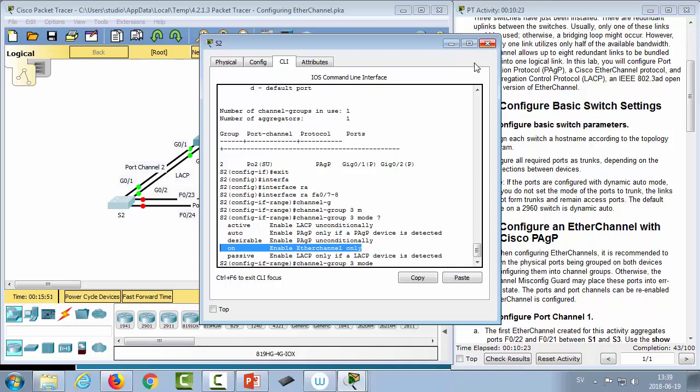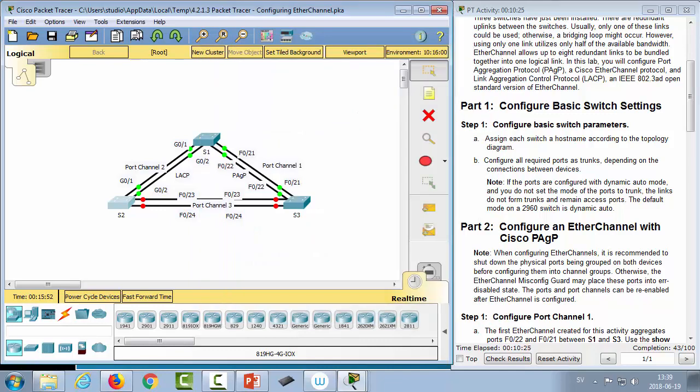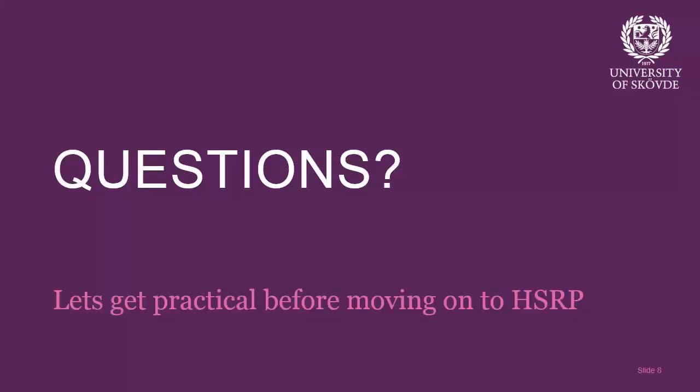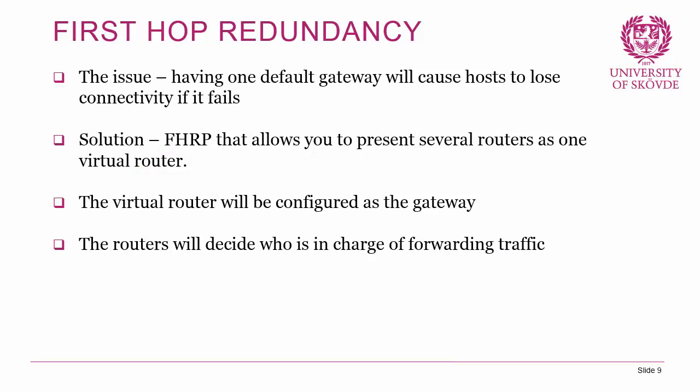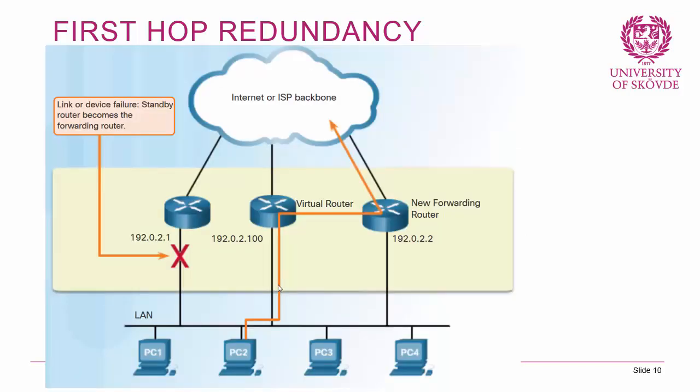Now let's get back to theory and move on to HSRP. HSRP is a first hop redundancy protocol. Having only one default gateway means hosts lose connectivity if that gateway fails. The solution is using a first hop redundancy protocol that allows you to present several routers as one virtual router, with hosts configured to use the virtual router's IP as their default gateway.